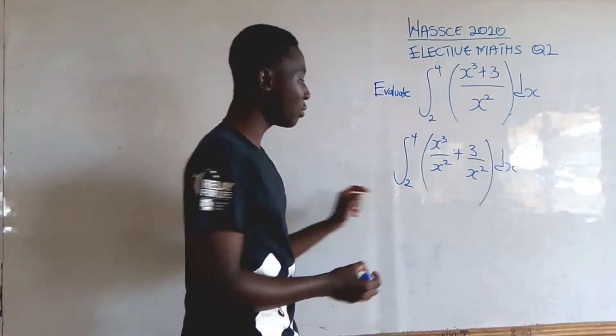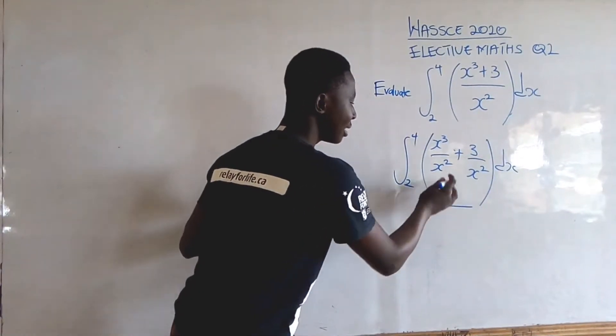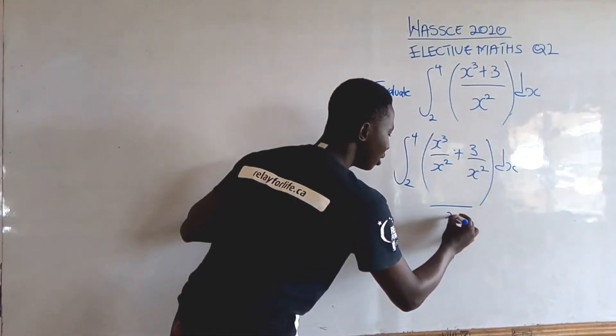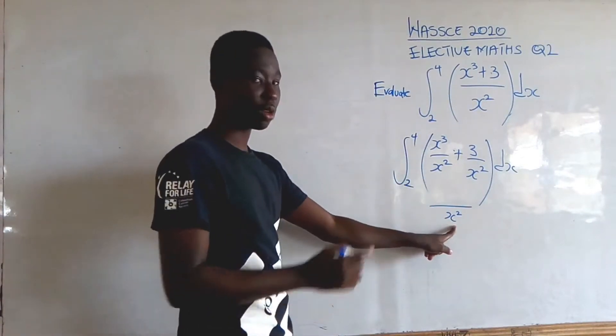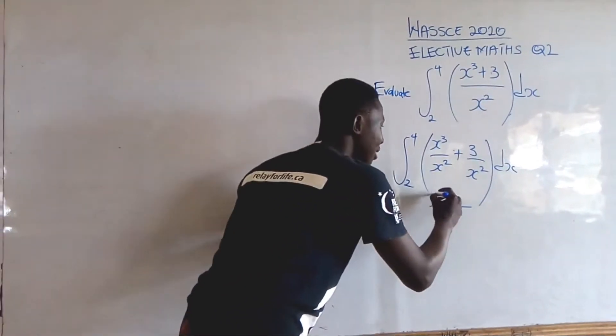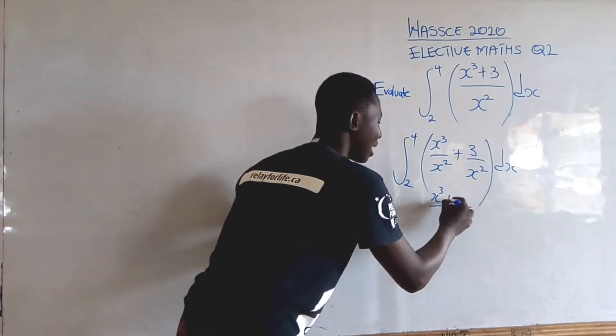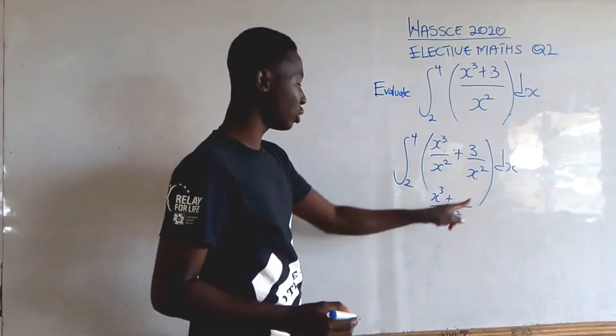This is true because when we find the LCM of this one, the LCM is going to be x². x² goes into x² once, so we get x² plus x² goes into x² once again.